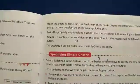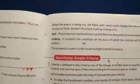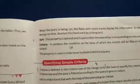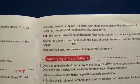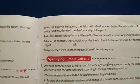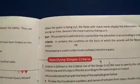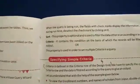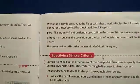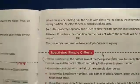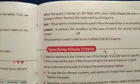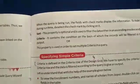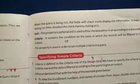When the query is run, the field with a check mark displays its information. To hide a field during runtime, deselect the check mark by clicking on it. The Sort property is optionally used to filter the data either in ascending or descending order.